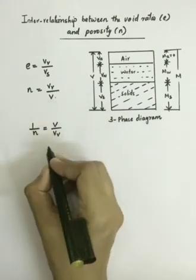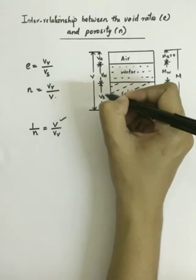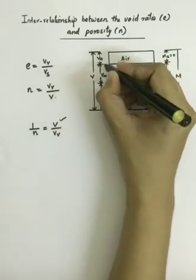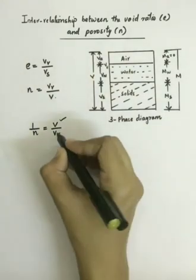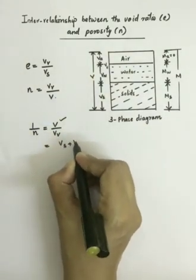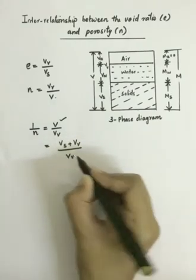So V can be written as what? Volume of solids plus volume of voids. So it can be written as volume of solid plus volume of voids divided by VV.